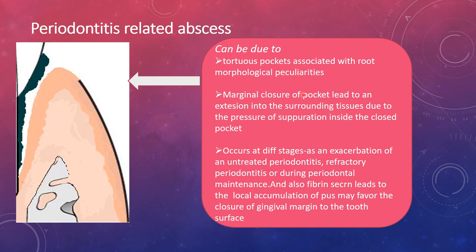Another reason is marginal closure of the pocket, leading to extension of inflammation into the surrounding tissues due to the pressure of suppuration inside the closed pocket. It can also occur at different stages — as an exacerbation of untreated periodontitis, refractory periodontitis, or during periodontal maintenance due to improper removal of local factors. Additionally, fibrin secretion as part of healing can lead to localized accumulation of pus, favoring closure of the gingival margin to the tooth surface.